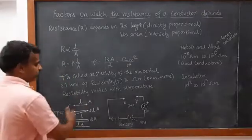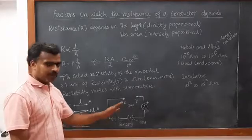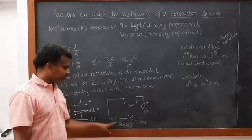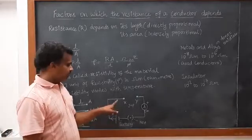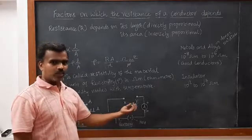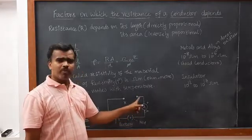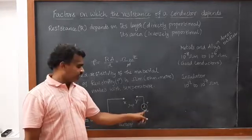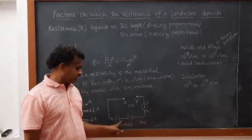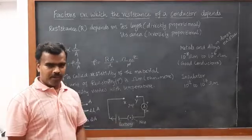For better understanding, we will do a small activity from your textbook. We have a battery connected with points X and Y, with a small gap. From Y, an ammeter is connected, with the ammeter's negative terminal connected to a key, and this path connected to the negative terminal of the battery.